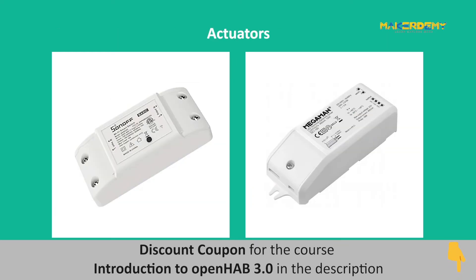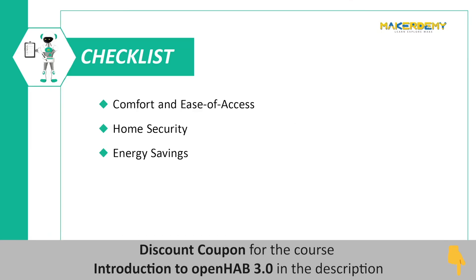Automation is achieved when we control a mechanism or function with data from the sensors. This is done using actuators such as relays, buzzers, and switches. A smart home system should prioritize three areas: comfort, security, and energy savings.